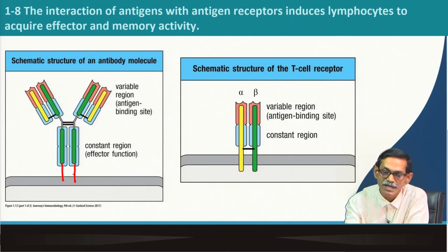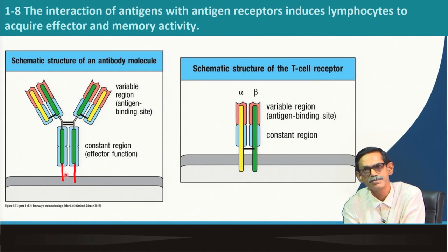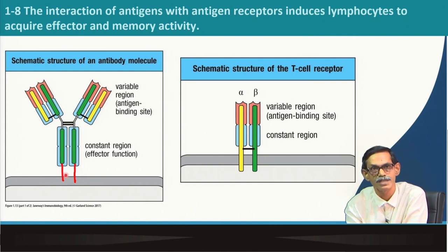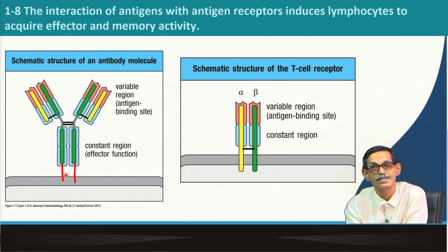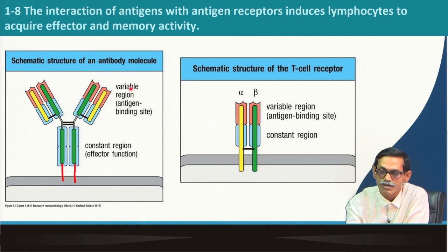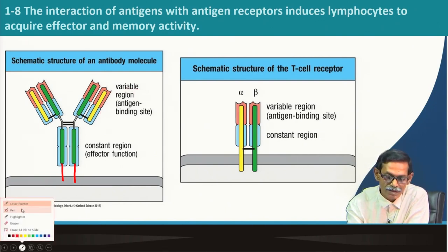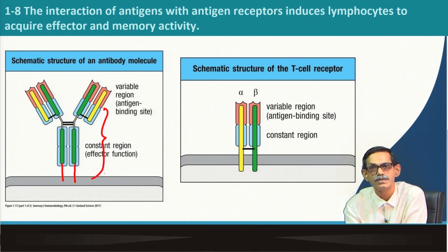If you look at this receptor, you see there is a Y-like structure. I will discuss this in much more detail in future classes when we specifically discuss antibodies. For today, you can see there is a variable region and a constant region — this constant region is responsible for effector functions.